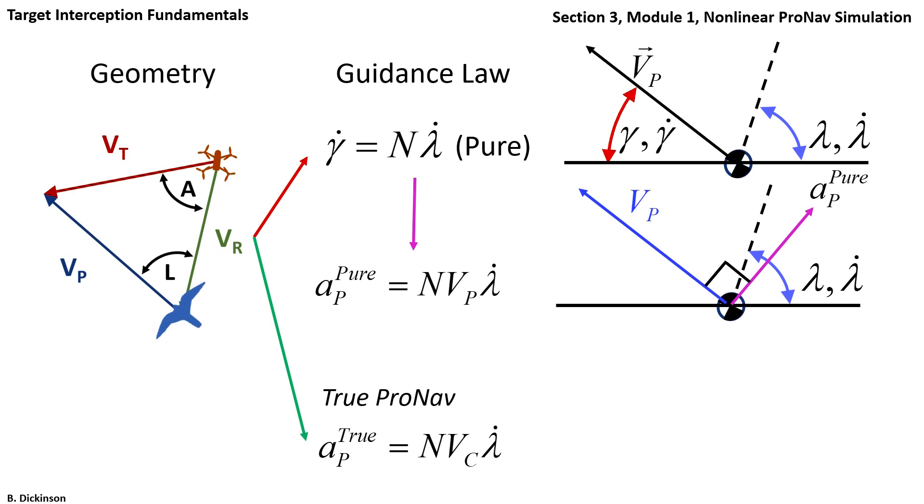There's another form of pronav that's very common. It's called true pronav. It's similar in form to the acceleration pure pronav, except VC is in place of VP. VC is called the closing velocity. It's negative, the time rate of change of the range to the target. So if VC is positive, you're getting closer to the target.